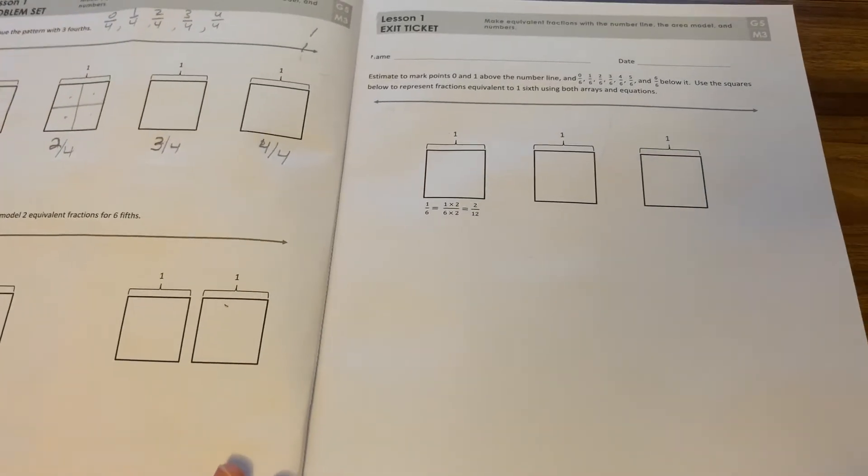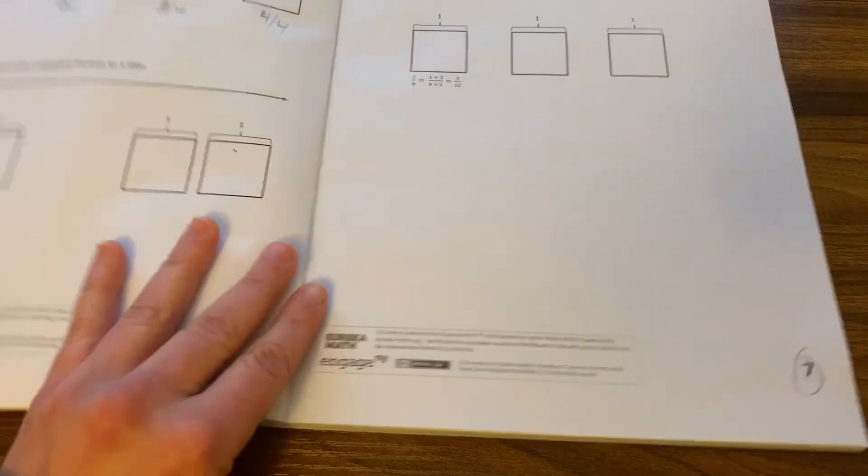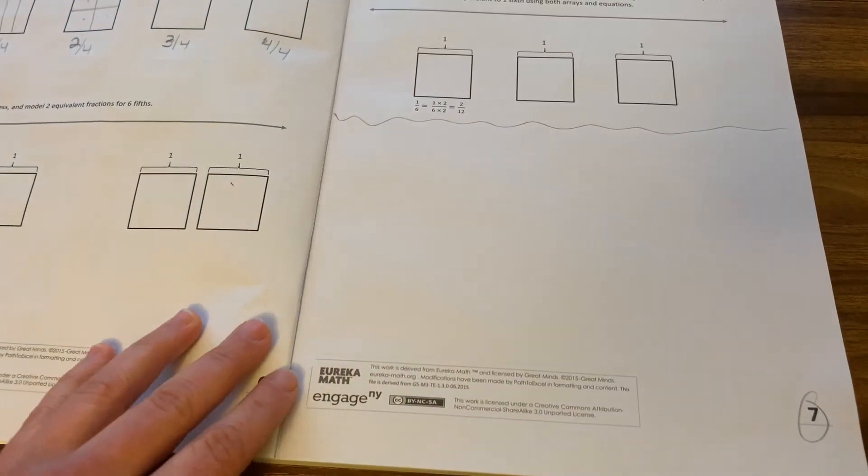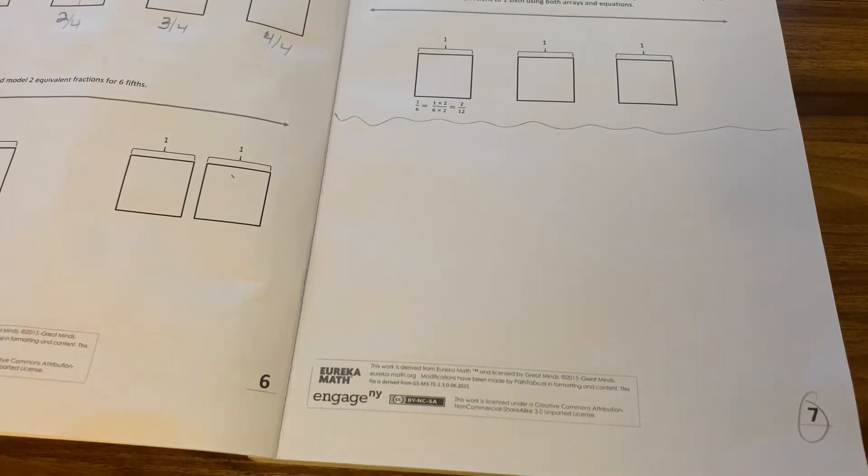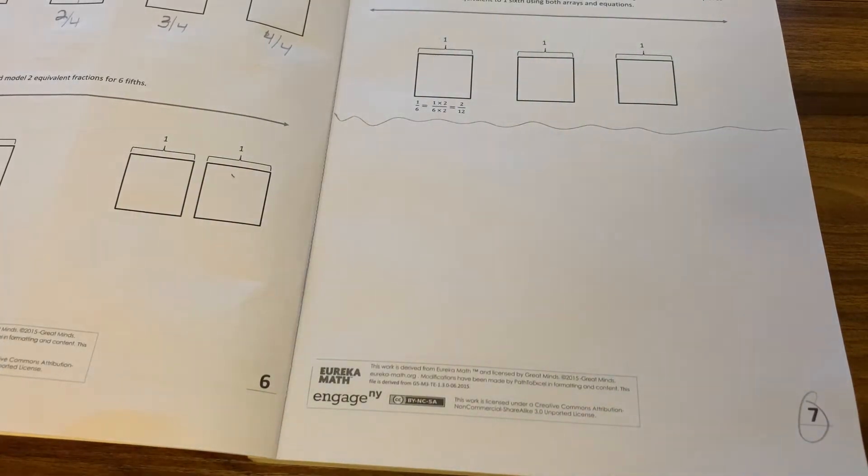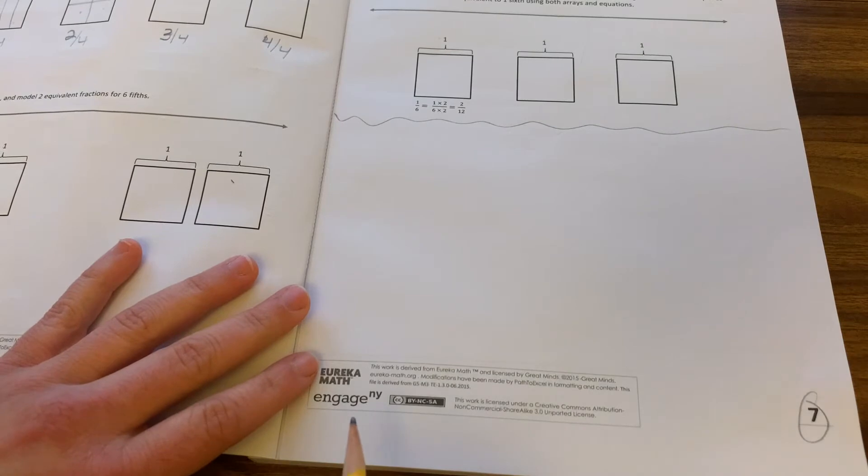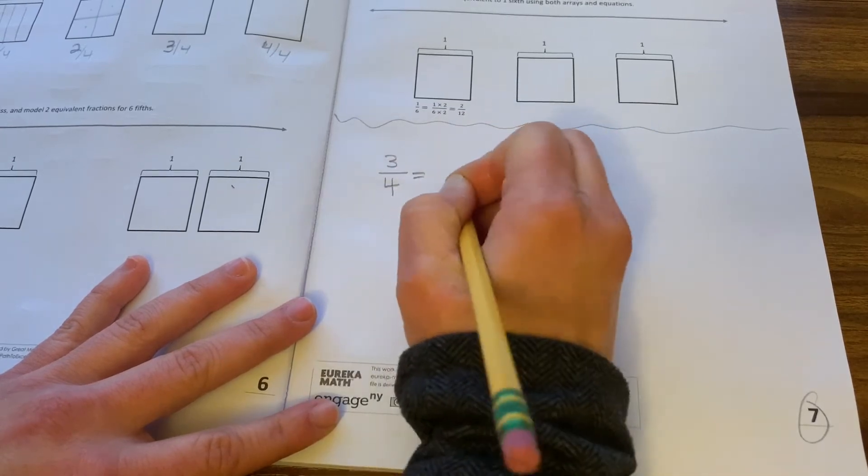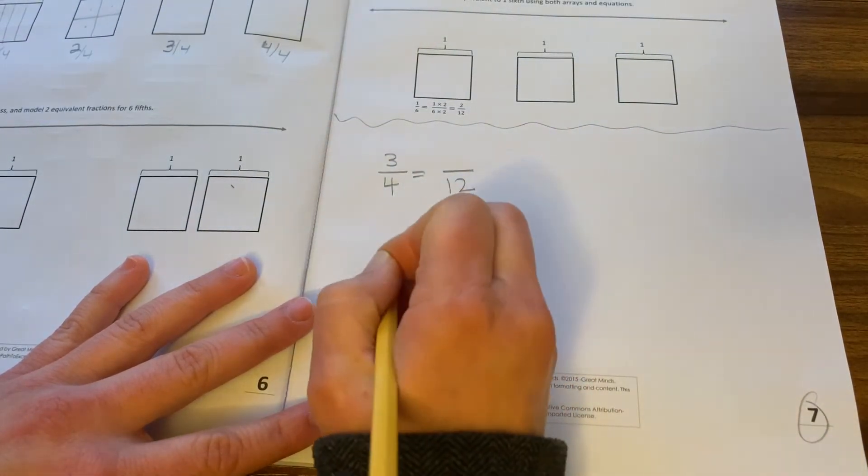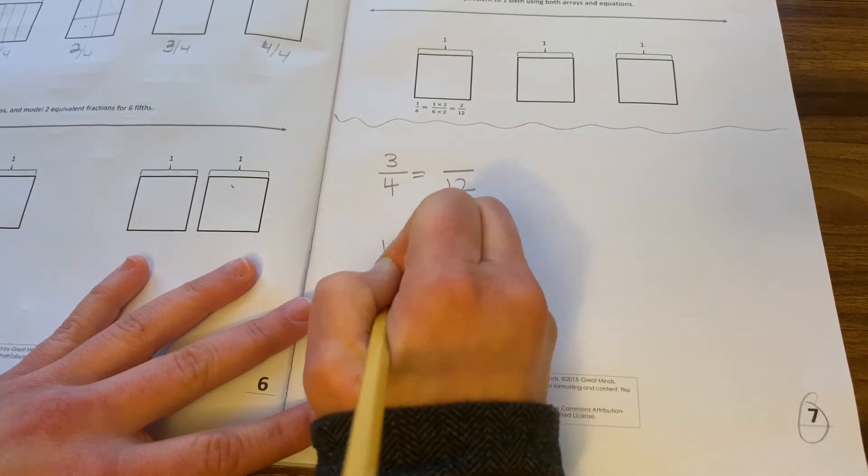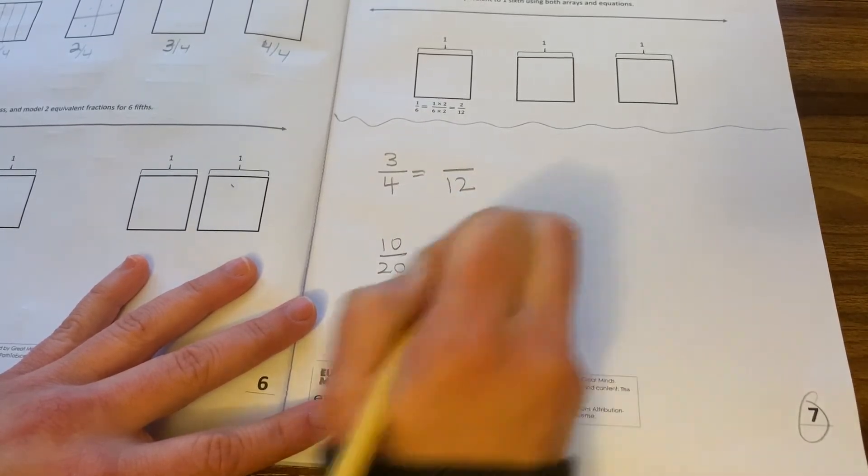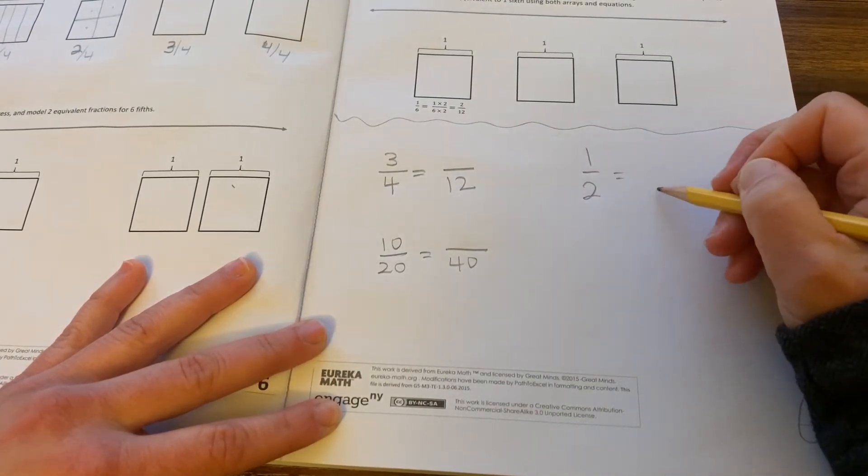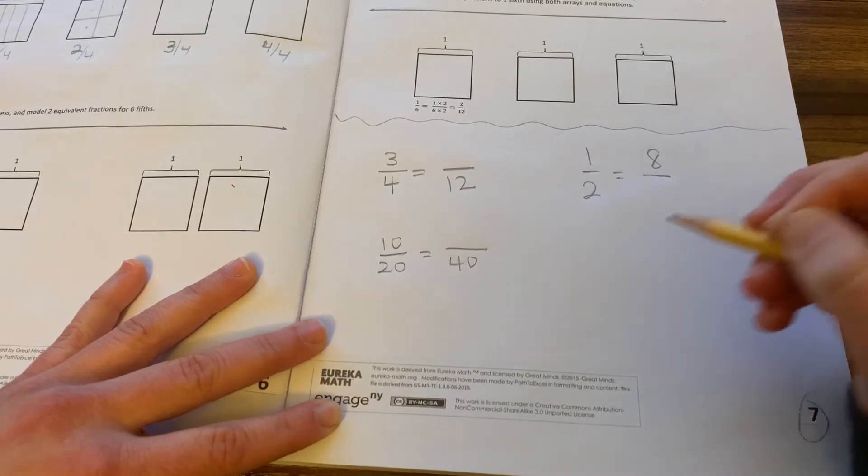Then the last thing we're going to do today, I'd like you to use page seven, because there's space, but we're actually not going to do the exit ticket. I'm going to draw a line. So, the last part I would like you to do is practice writing equivalent fractions like we were doing together as the warm-up. So, I'm going to write a few problems, and I do want you to copy them down. So, don't worry, I'll move my hand in a couple of minutes.